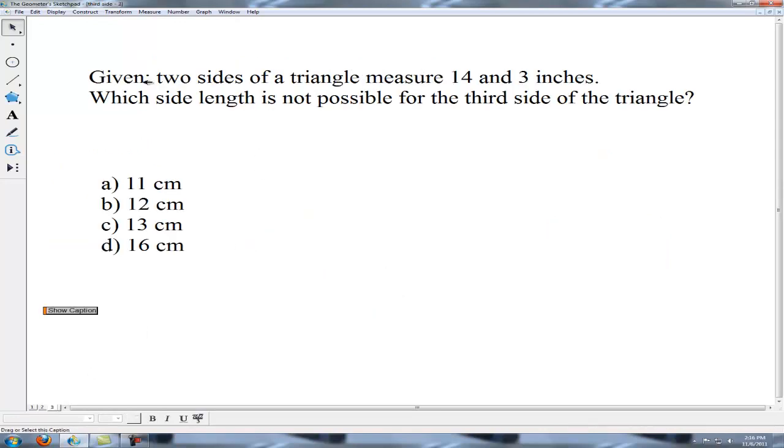Without a diagram we are just given two lengths for two sides of a triangle, 14 and 3. Which side length is not possible? Again we can get our maximum by adding the two segments, our minimum by subtracting them.